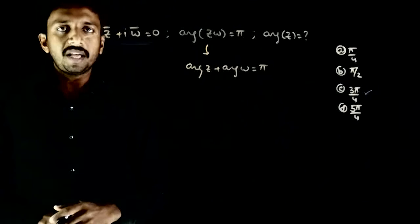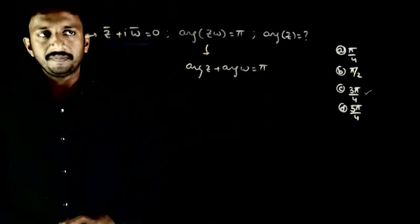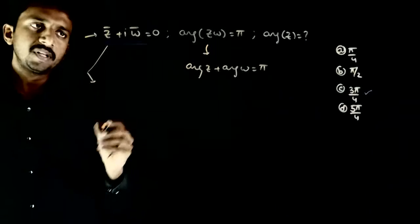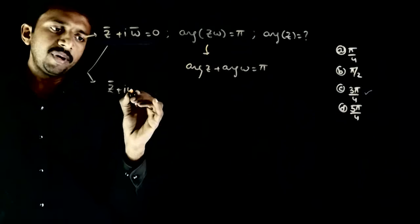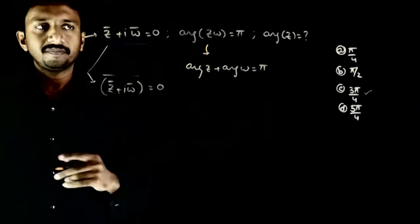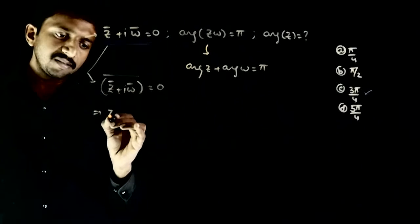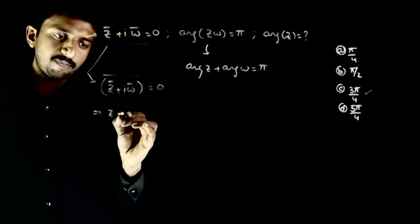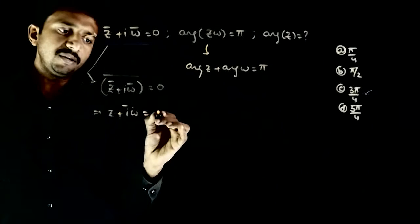So now I got one equation in argument of z and argument of omega. Agar ek aur equation le aa sakta hoon, toh dono ko solve karke argument of z nikaal sakta hoon. So let me use the second equation. z̄ + iω̄ whole bar is equal to 0. If this is equal to 0, iska bar bhi 0 hai. This implies: z bar whole bar is z, plus i bar omega is equal to 0.